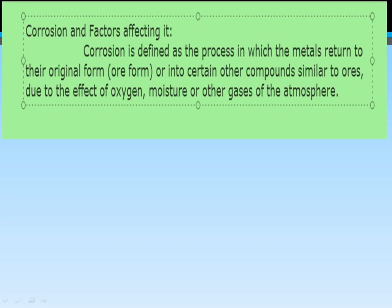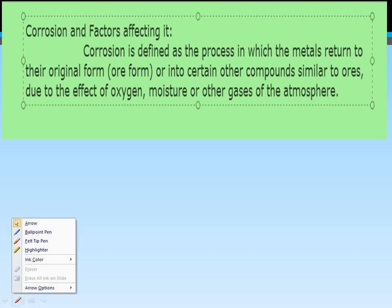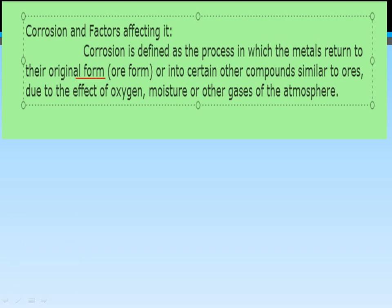Corrosion is defined as a process in which metals return to their original form, that is their ore form, or into other compounds similar to the ores, due to the effect of oxygen, moisture, or other gases of the atmosphere. In short, corrosion is what happens when the metal goes back by the action of air, oxygen, moisture, and gases. That is known as corrosion.